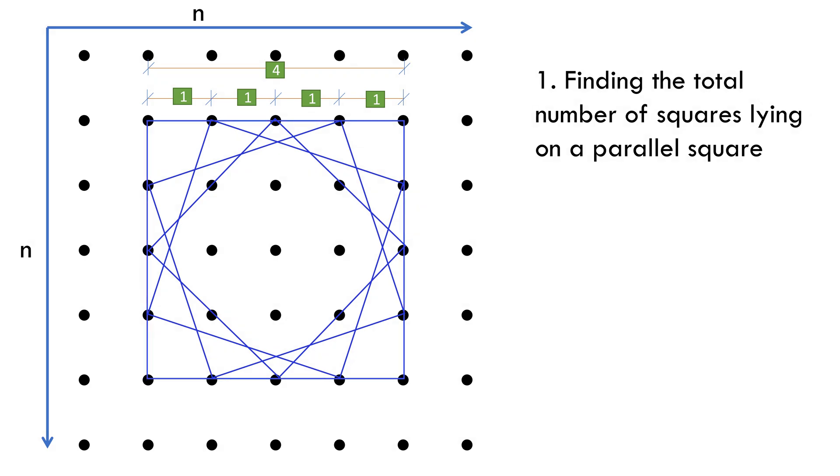So with that, there are four squares lying on the 5x5 grid. That is to say, a parallel square with side 4 has 4 squares lying on it.